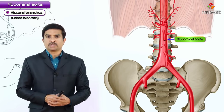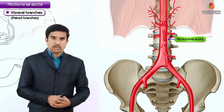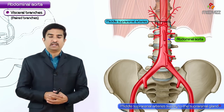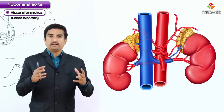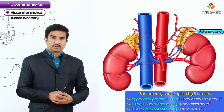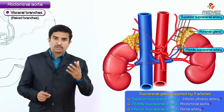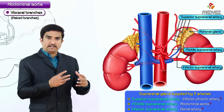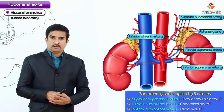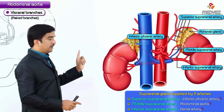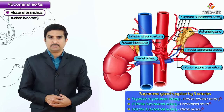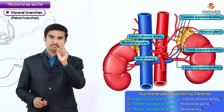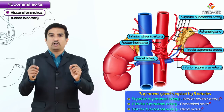The paired visceral branches of the abdominal aorta include the middle suprarenal arteries, which supply the suprarenal (adrenal) gland. The adrenal gland is supplied by three arteries: the superior suprarenal artery, middle suprarenal artery, and inferior suprarenal artery. The superior suprarenal arteries arise from the inferior phrenic arteries, while the middle suprarenal artery is a direct branch of the abdominal aorta — an important exam point.